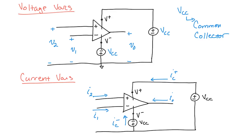These are just reference directions for analysis — the current can really flow the other way. Same with the voltages: if the output is a sinusoid it might swing the other direction, or if you flip the input polarity the output may flip too. But for our reference, this is how we'll start our analysis. Now let's move on to the next section and start talking about the gain of these amplifiers, how they're used, and do some basic circuit analysis.